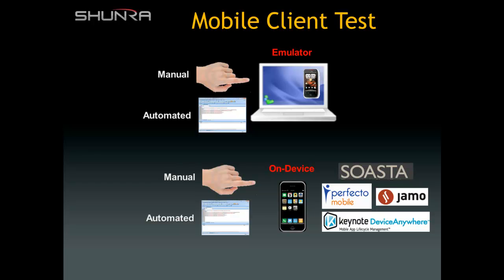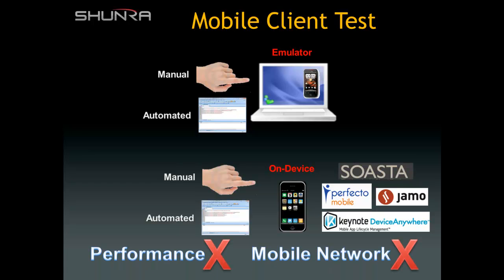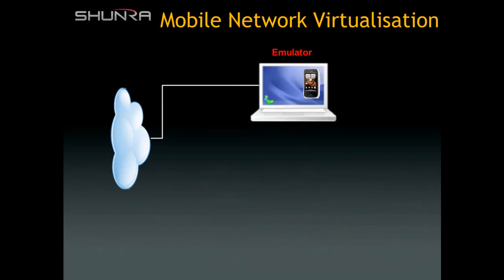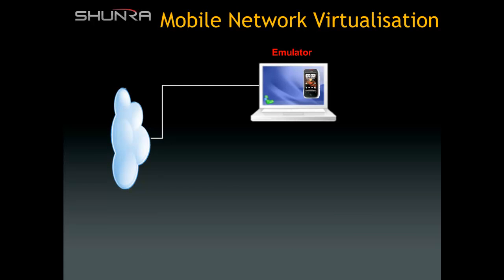The critical point to note is that this testing — whether manual or automated, using an emulator or on device — is typically focused on functionality, not on performance. These tests also cannot replicate the real mobile conditions encountered by users. So the question is: how can we extend mobile functional testing to verify the real end user experience?